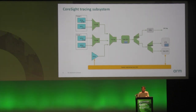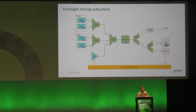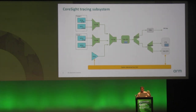Today our topic of interest is the TMC-ETR — the Embedded Trace Router — which collects traces and dumps them into system memory so that you can easily context switch and get better performance with trace collection. Also in the picture are links, shown in green, which carry trace data from sources to the relevant sinks.